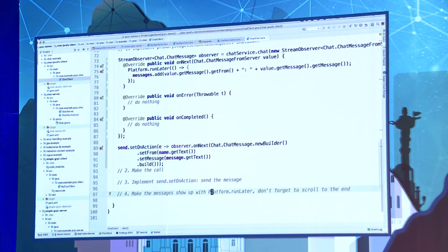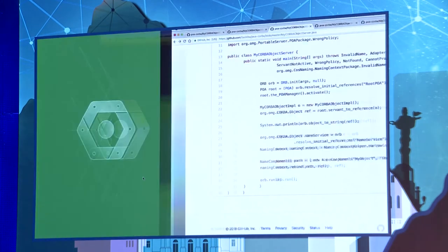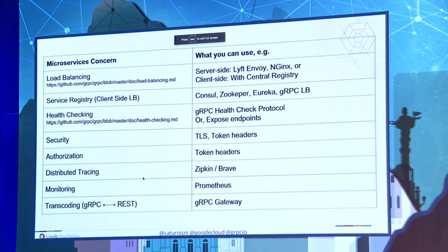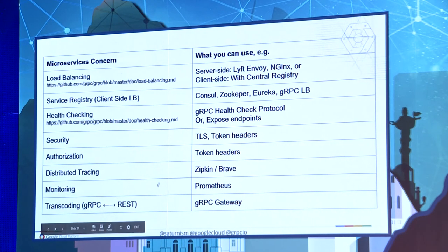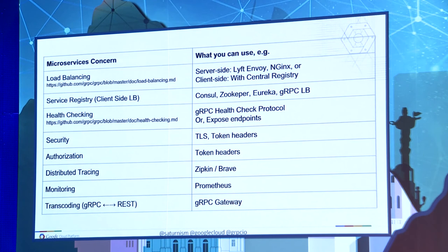There's a lot more you can do with gRPC. You can use client-side load balancers, or server-side load balancers like Envoy, which is very popular in a service mesh. Linkerd works as well. For service registry integration, you write your own name resolver. For observability in a microservices architecture you need distributed tracing — you can use Brave or Zipkin to trace service-to-service calls automatically, or OpenCensus, another open source project from Google. You can monitor metrics with Prometheus using interceptors to record all metrics.